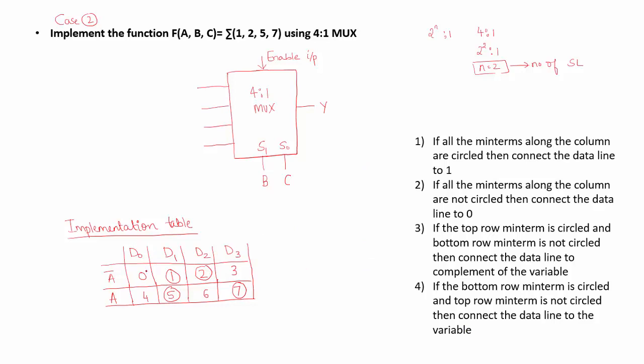Let me make use of these rules and see what must be connected to each of the data line. Along D0 column, I can see that none of the minterms are circled. So as per rule 2, I must connect D0 to 0. In D1 column, both the minterms are circled. So as per rule 1, I must connect it to 1.